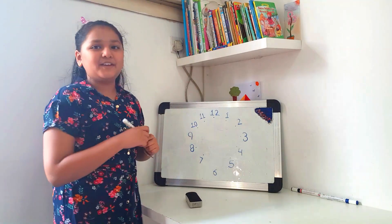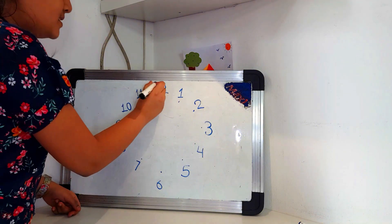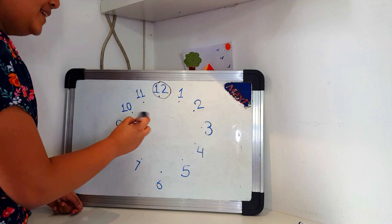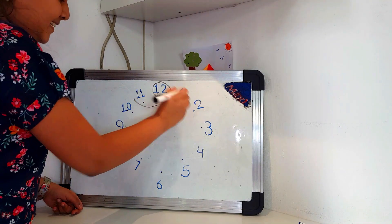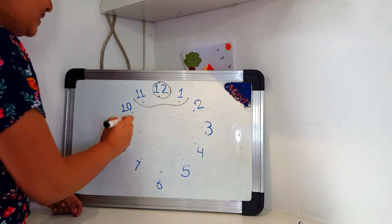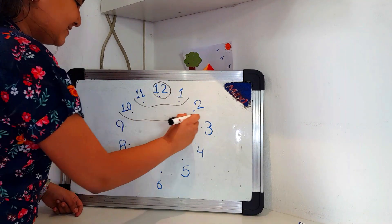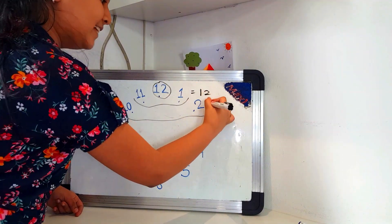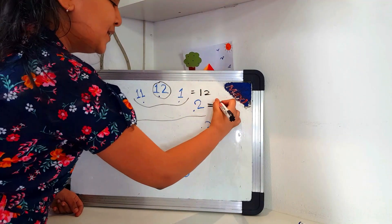So let's find the trick number 1. So 12 is the largest number. Let me just circle it. 11 plus 1 is equal to 12. 10 plus 2 is also equal to 12.